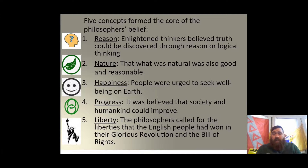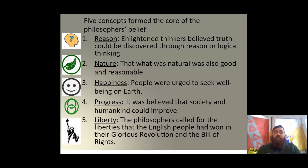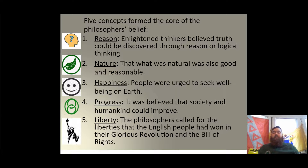The five concepts drilled down into the Enlightenment are: one, reason — enlightened thinkers believed truth could be discovered through logical thinking; two, nature — that which was natural was good and reasonable; three, happiness — people were urged to seek well-being on earth; four, progress — it was believed that society and mankind could be improved; and five, liberty — philosophers called for the liberties the English people had won in their Glorious Revolution and Bill of Rights. Liberty cannot be liberty until all enjoy it — thus, liberty and progress are completely intertwined.